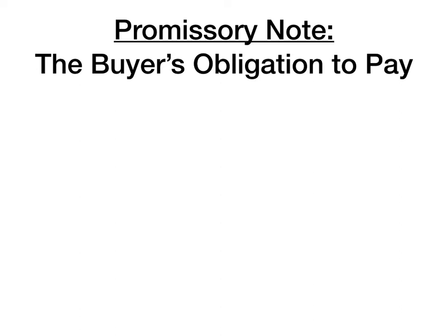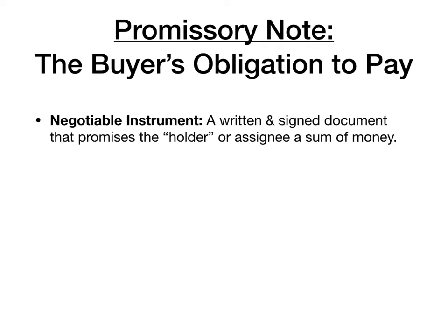You can think of a promissory note as evidencing the buyer's obligation to pay. A promissory note is a special type of contract called a negotiable instrument. A negotiable instrument has special power in contract law because it can be transferred or sold.